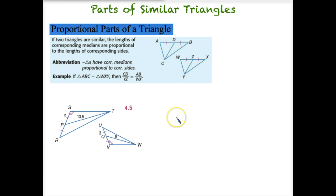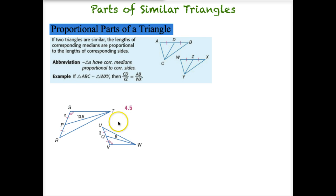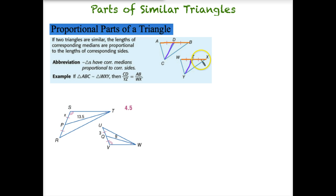Now let's look at medians. The rule for medians is the same as for altitudes. If two triangles are similar, the lengths of the corresponding medians are proportional to the lengths of the corresponding sides. So if we take CD, the median in this triangle, and compare it to YZ, the median in the other triangle, they should be in the same proportion as corresponding sides, such as AB compared to WX. It doesn't matter which corresponding sides you use, as long as they are in corresponding positions.